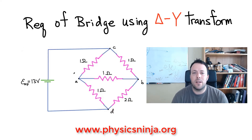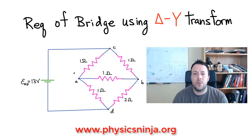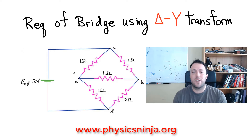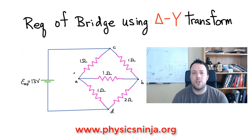So I wanted to go back — thanks for the comments. Here's the solution to this particular bridge network. We're going to find the equivalent resistance of this. You can't use simple series and parallel; you could work at this problem all day and never get to the answer. But I'm going to show you how to apply the delta-Y transformation to this problem.